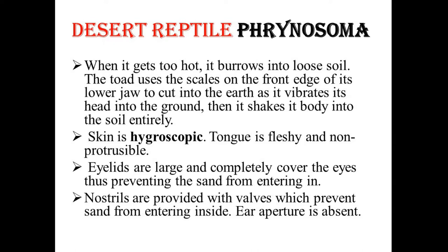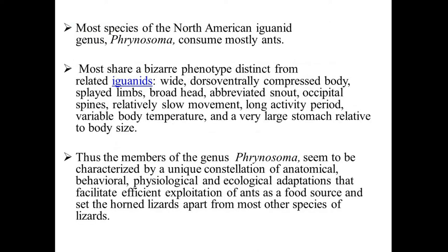The horned toad shakes its body into the soil entirely. The skin is also hygroscopic, meaning it absorbs moisture from the atmosphere. The tongue is fleshy and non-protrusible. Eyelids are large and completely cover the eyes, preventing sand from entering. The ear aperture is absent in Phrynosoma. Most species of the North American genus Phrynosoma consume mostly ants as their food material, sharing a distinct phenotype with a dorsoventrally compressed body.